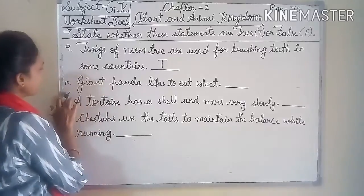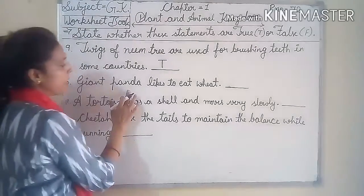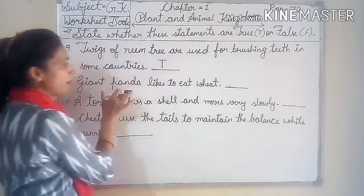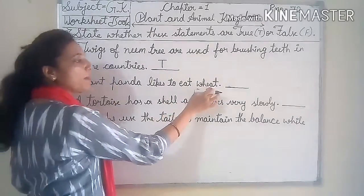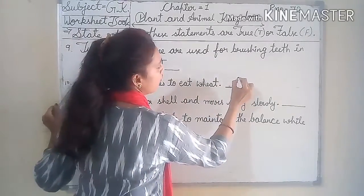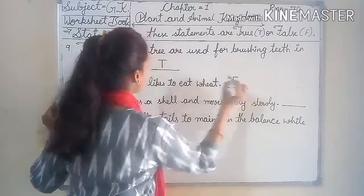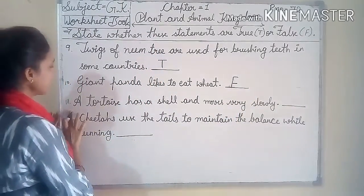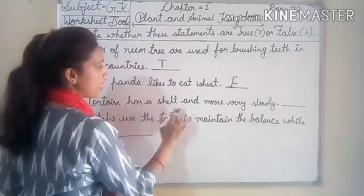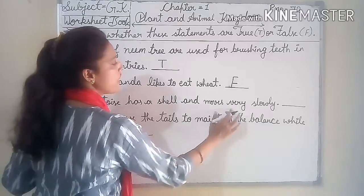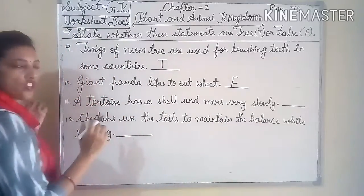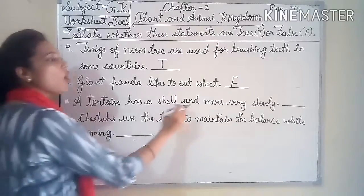Next, number 10: Giant panda likes to eat wheat. Does the giant panda like wheat? No. So you write here: false. Next, number 11: A tortoise has a shell and moves very slowly. Does the tortoise have a shell? Yes, it has a shell. So you write here: true.